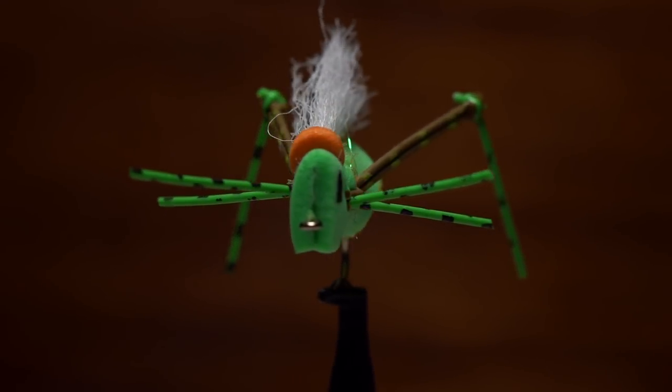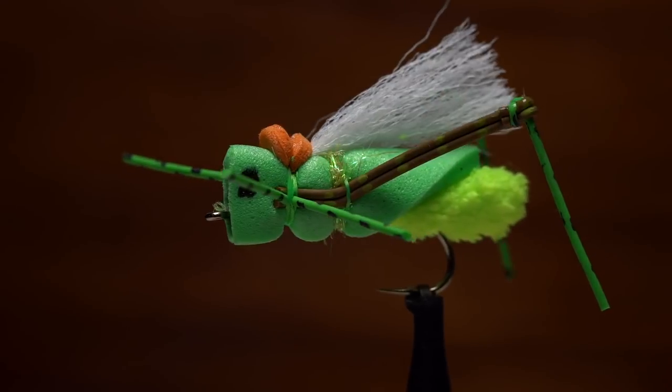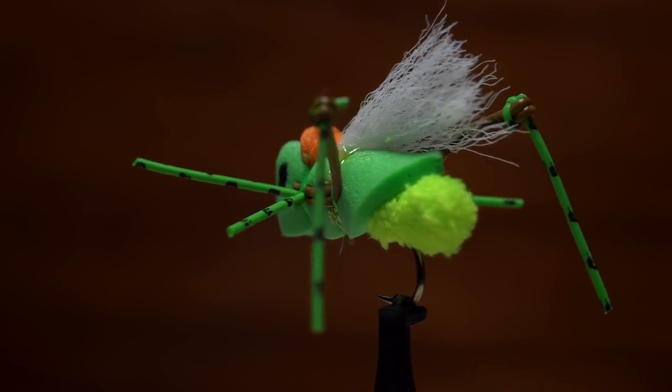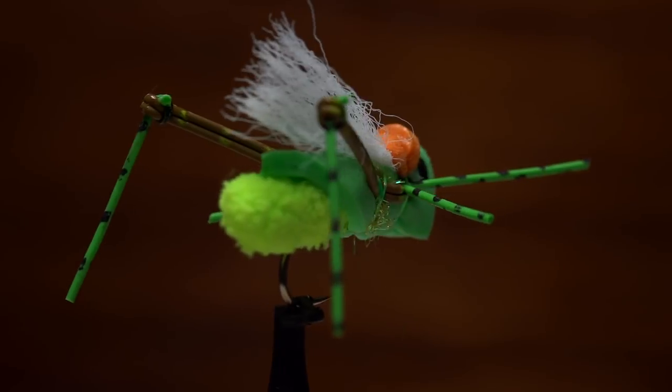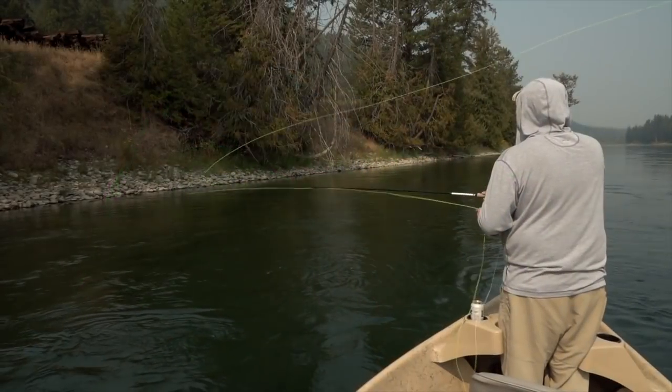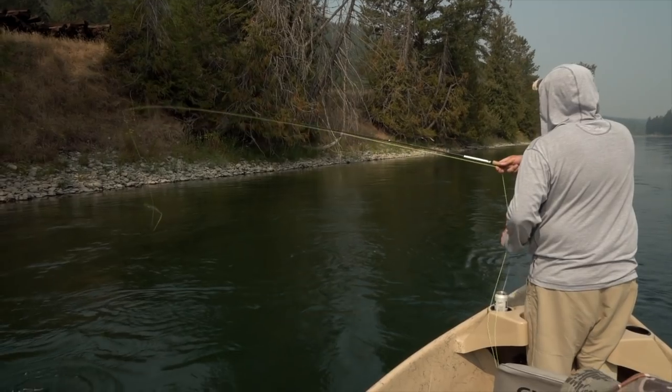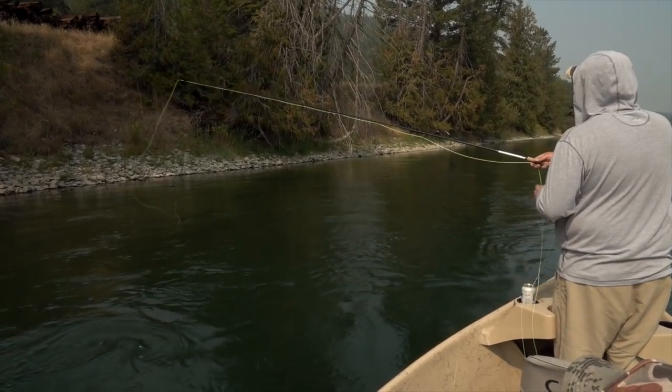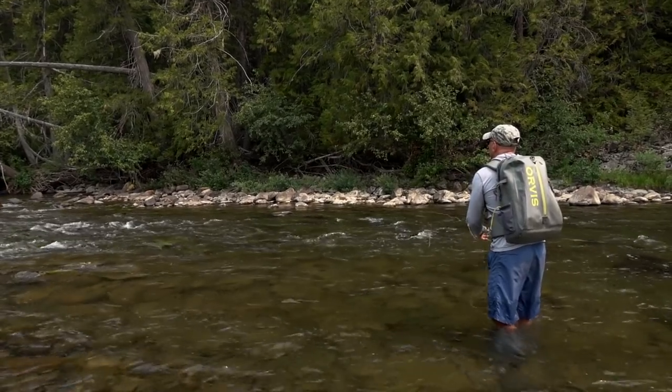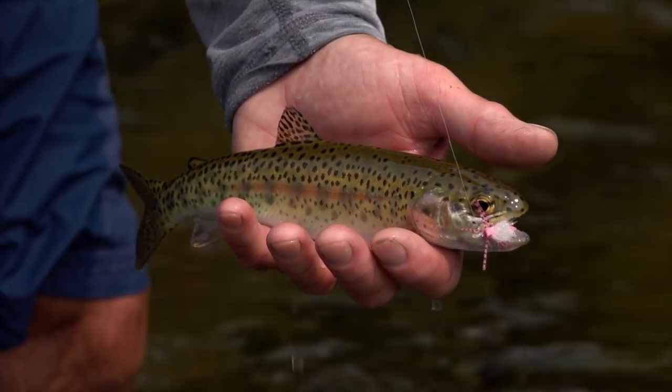Foam flies deserve some space in every angler's fly box. They can be used when you're pounding the banks of a large river with terrestrials in search of brown trout, or pursuing little wild rainbows on a small mountain stream.